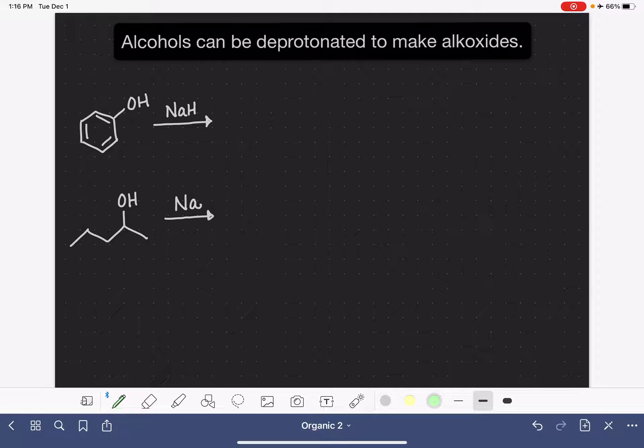Alcohols can be easily deprotonated using a strong base to give a molecule called an alkoxide. Here are a couple of examples. We have two different types of alcohols.